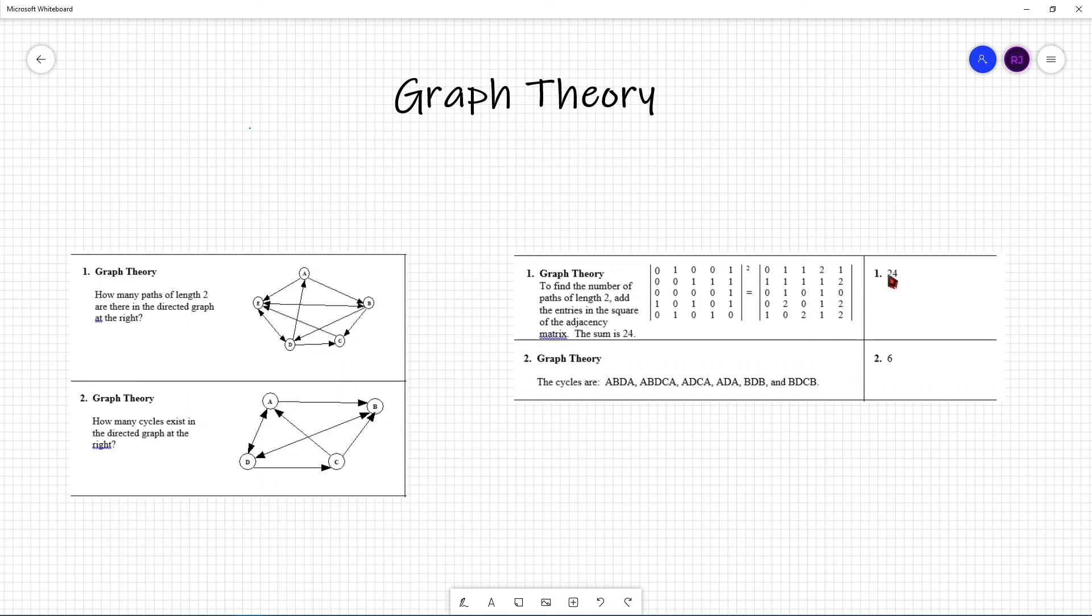So, that is how you can use adjacency matrix in order to solve these type of problems where it asks for paths of certain lengths. The second question is, how many cycles exist in the directed graph at the right? Now, there's no trick to this problem. You just have to manually go through each combination and make sure or check if it's a cycle.